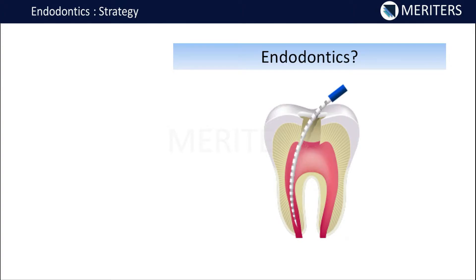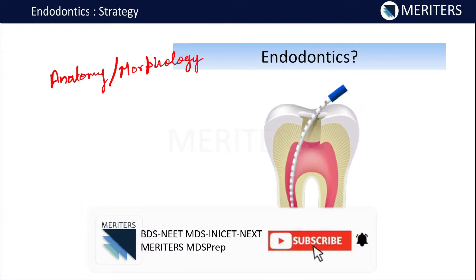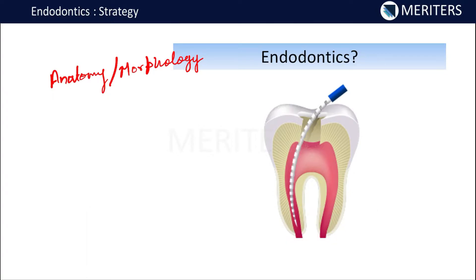First of all, you will require knowledge of the anatomy and morphology of the tooth. For example, if you are starting with an anterior tooth, you should know the probability of having two canals. For the upper first molar, you should know the probability of getting a fourth canal, and similarly for the lower first molar. You should know how many canals there are, what kind of access cavity preparation is needed, and whether the two canals will be in the mesial root or in the distal root. All that knowledge is a prerequisite for starting root canal treatment.